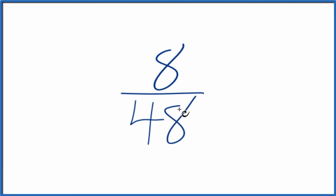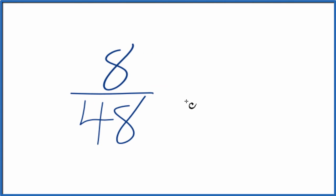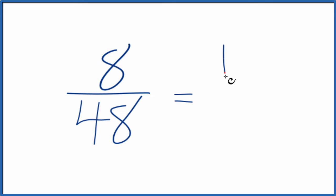If you knew that 8 went into 48 six times, you could just say 8 divided by 8 is 1, and then 48 divided by 8, that's 6. 6 times 8 is 48.